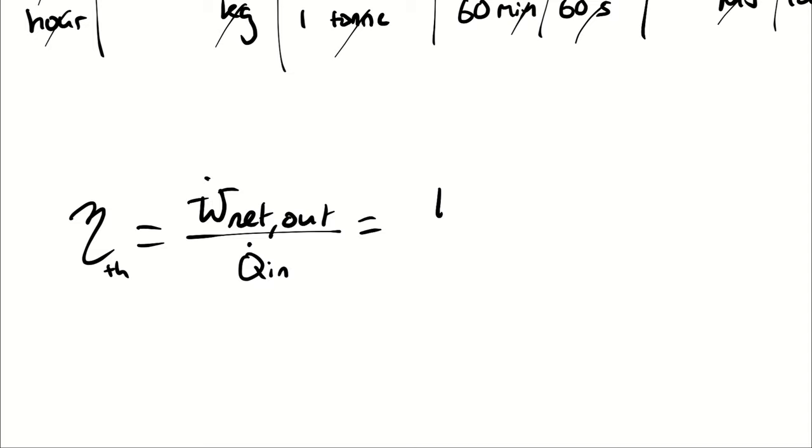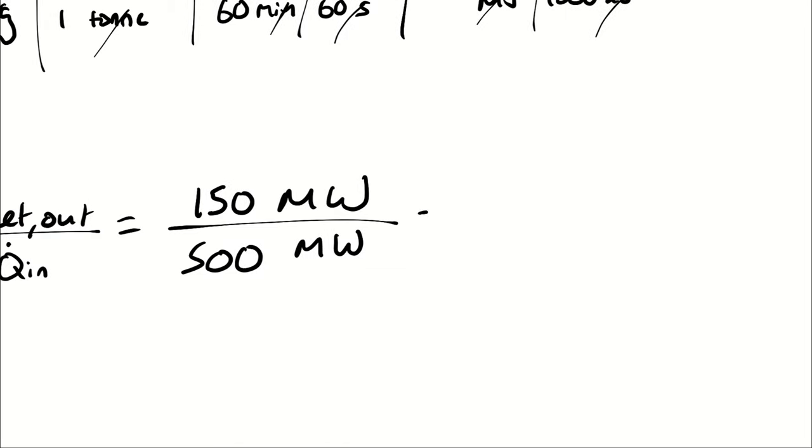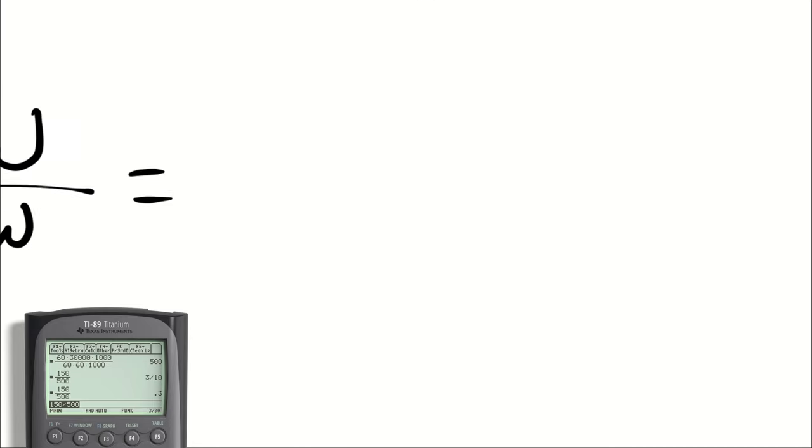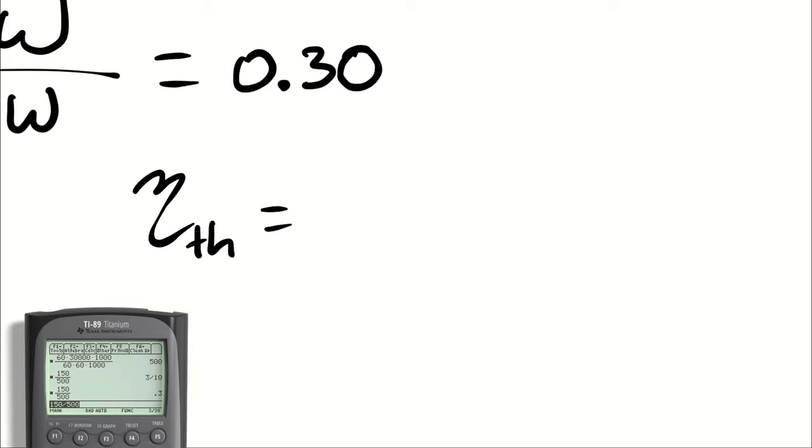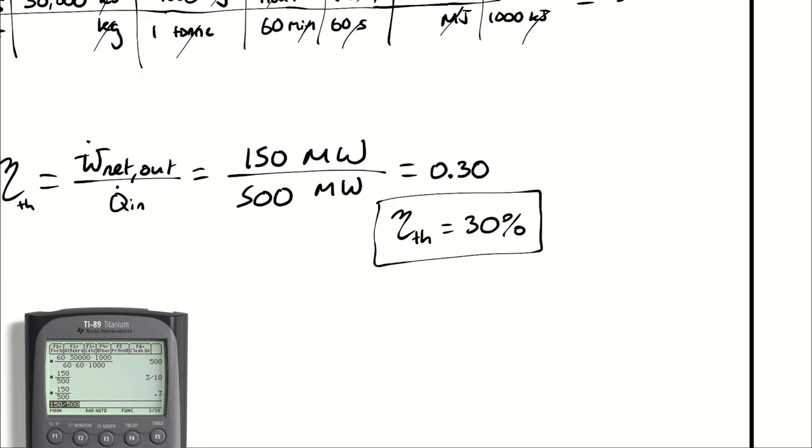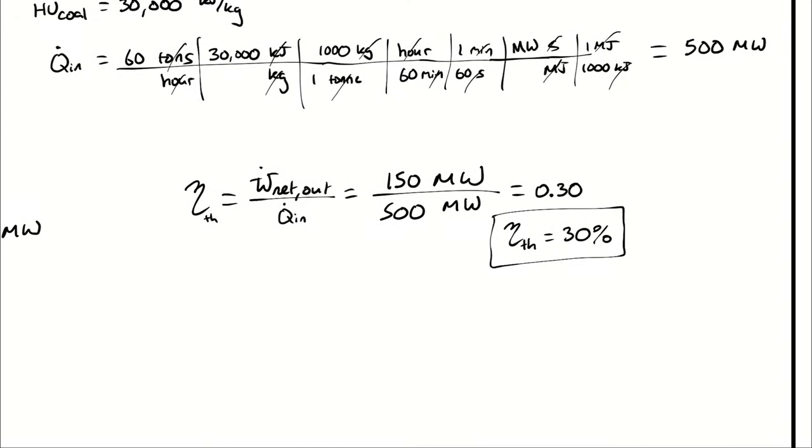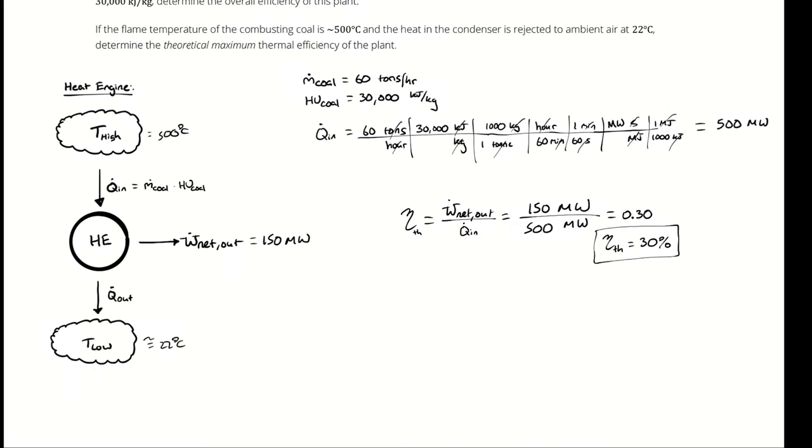Now we take our net power output, which we were told is 150 megawatts, and we divide by our shiny new Q_in, which is 500 megawatts. And we get a thermal efficiency of 30%. Just to verify, I will let the calculator second my calculation. So assuming that all of the coal produces 30,000 kilojoules per kilogram of heat transfer, and all of that heat transfer is being acquired for the purposes of this power production, the thermal efficiency of this facility is 30%.